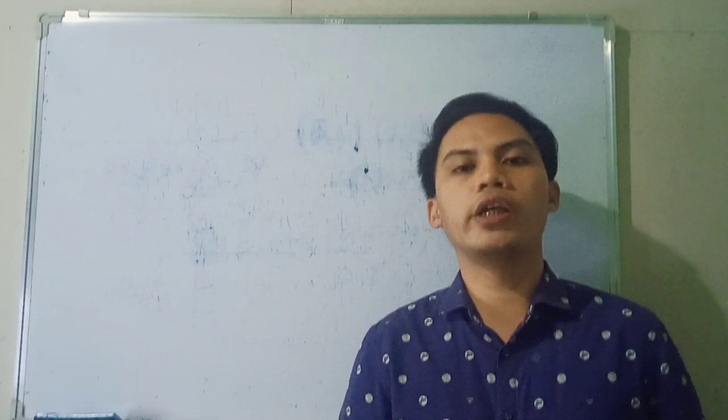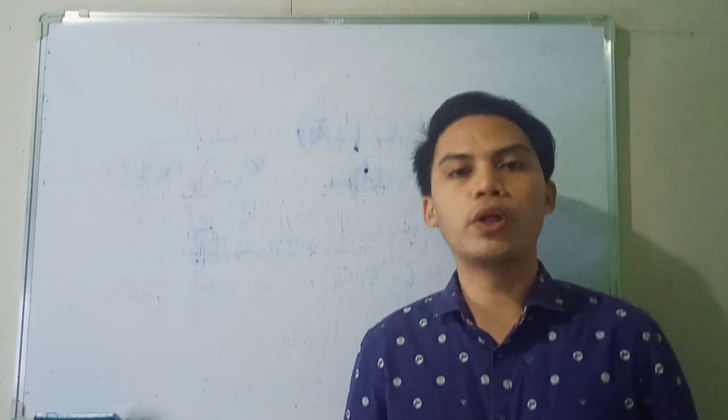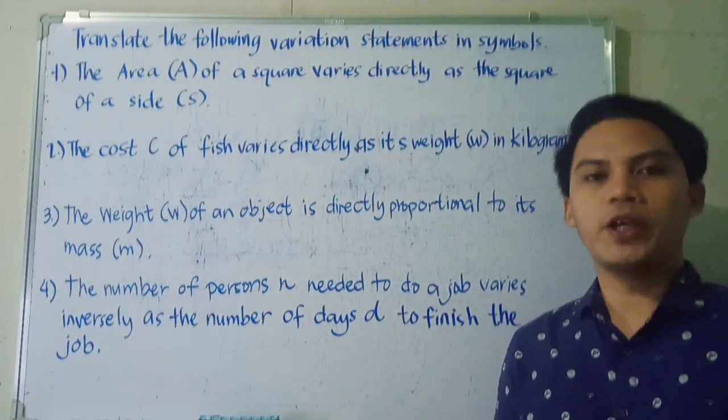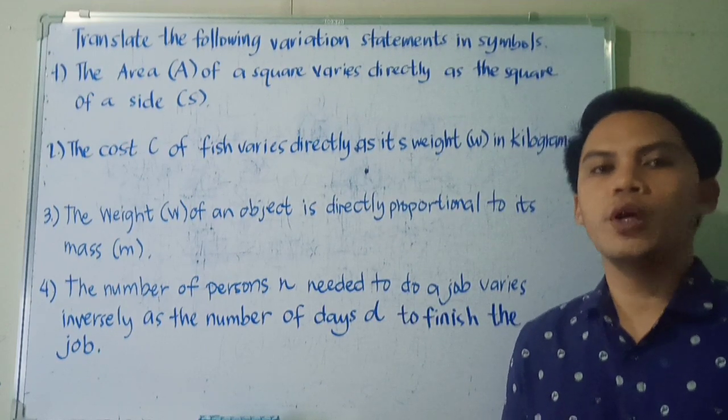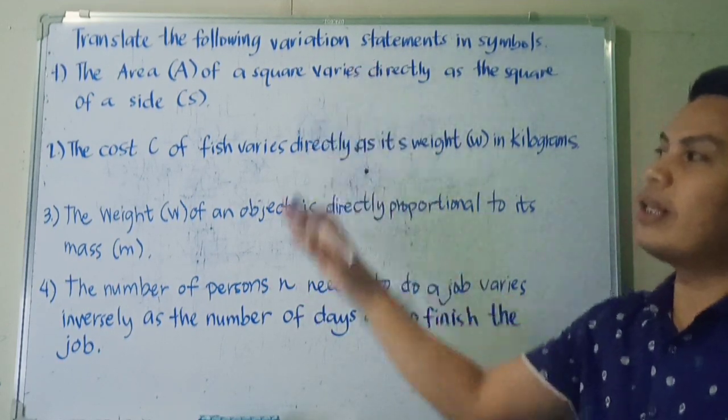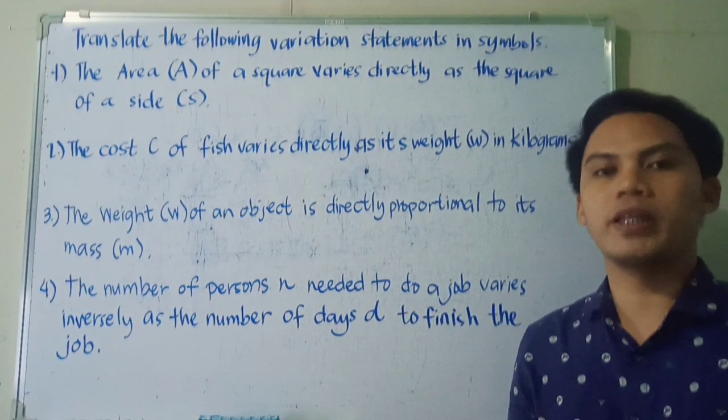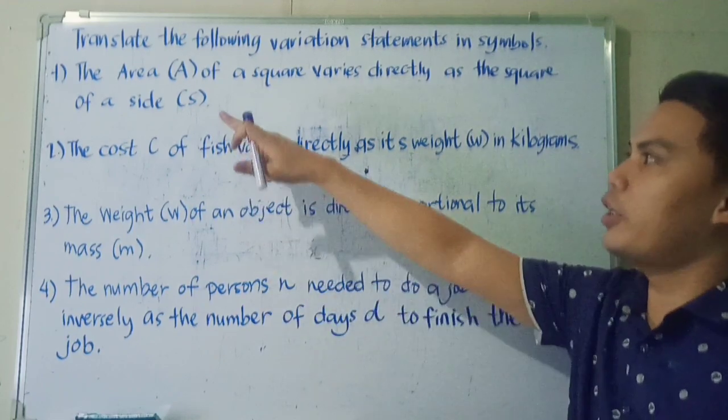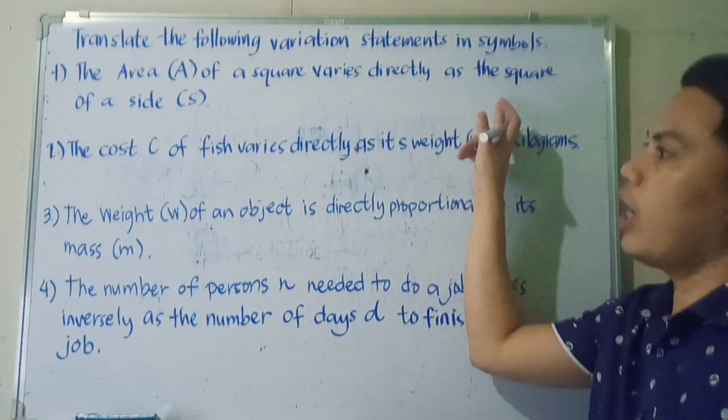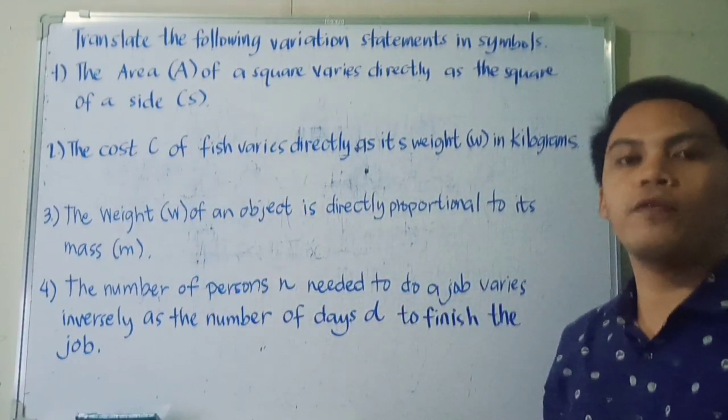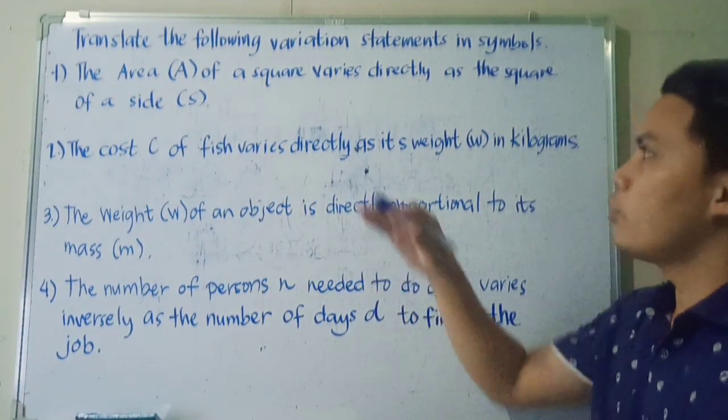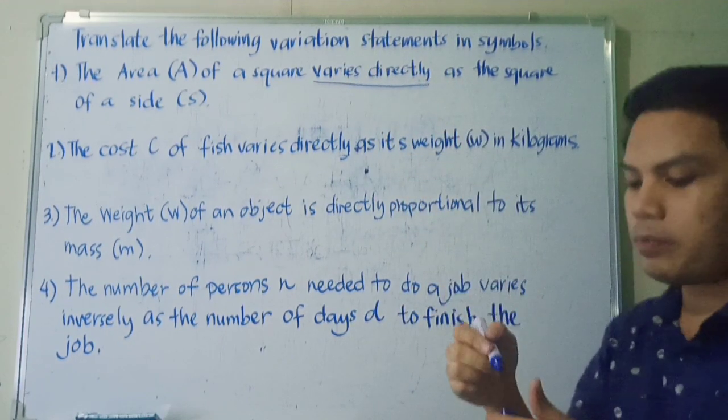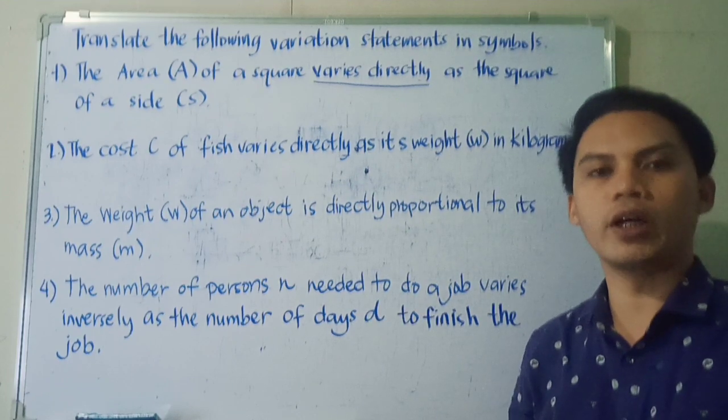So this time I'm going to give examples and we're going to translate those statements into mathematical symbols. So I have here our first set of examples. So what we're going to do, we're going to translate these statements into mathematical symbols. So let's start. Let's have the first example. The area A of a square varies directly as the square of a side. So we can see here the clue would be varies directly.